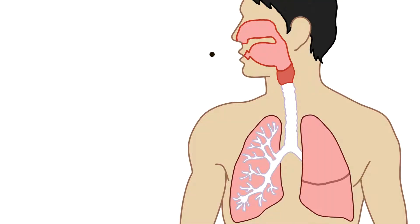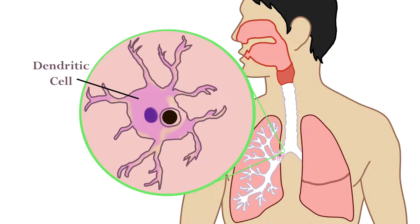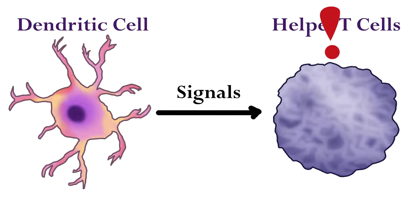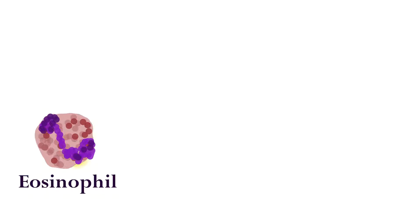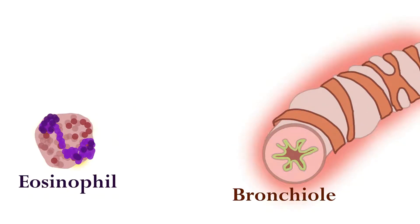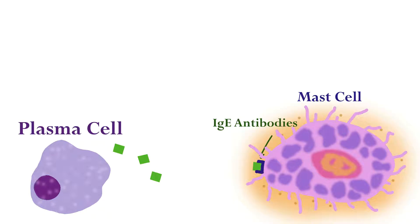In extrinsic asthma, when allergens enter the body, they are engulfed by dendritic cells through their cell membrane via endocytosis. The dendritic cells travel to the lymph nodes where they signal helper T-cells of the invasion. Helper T-cells produce chemicals called cytokines, which signal eosinophils to produce inflammatory chemicals to cause bronchial constriction and stimulate increased production of mucus. They also stimulate plasma cells to release IgE antibodies — proteins that bind to receptor proteins on the cell membranes of mast cells.